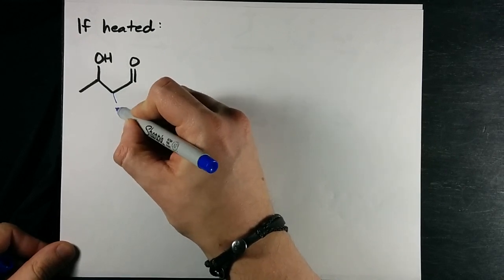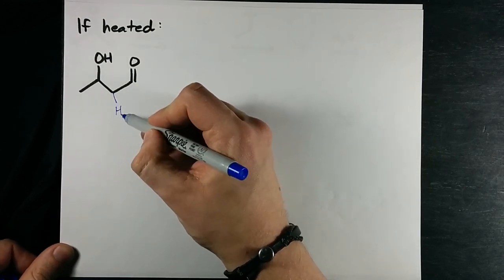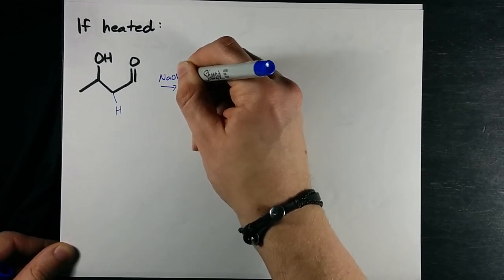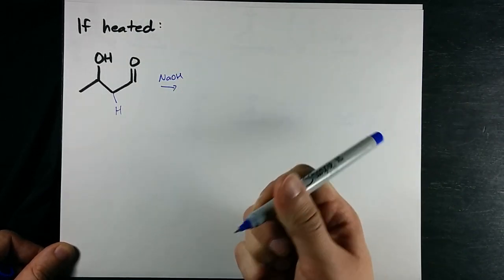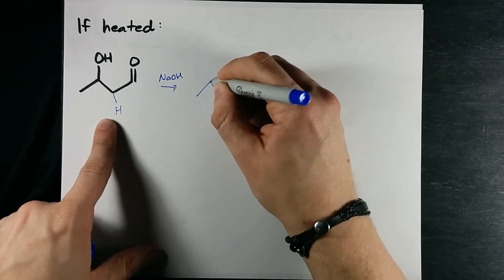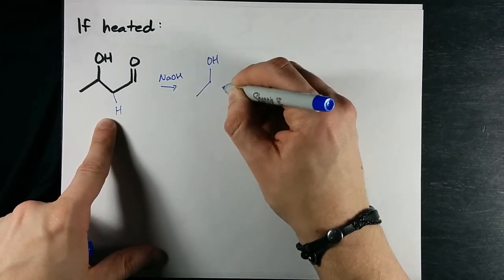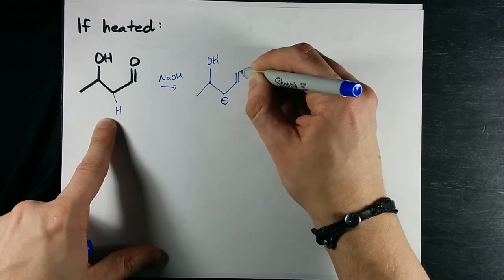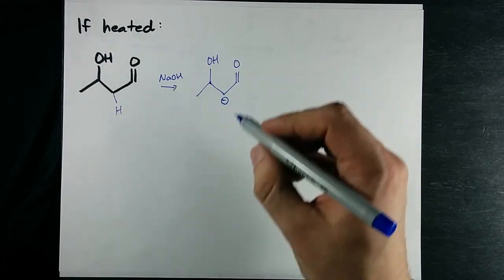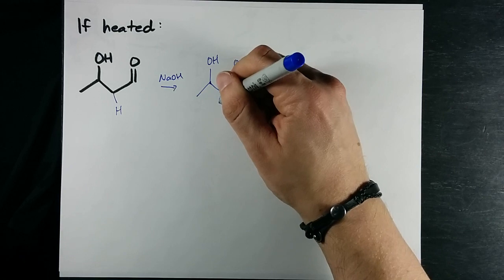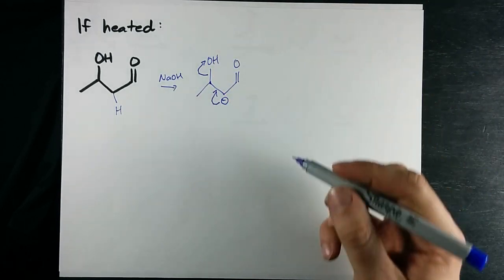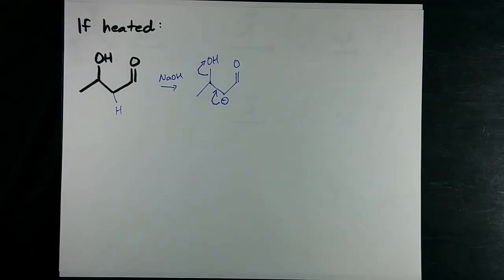We have alpha protons here as well and so in the same NaOH solution that we had from before we could rip a proton off of that. Still have a lone pair so he gets a negative charge. And what I'm going to do here is I'm going to move that lone pair into the double bond and give that pair of electrons to the OH.